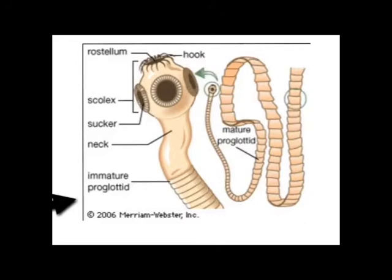A rudimentary nervous system and excretory system run the length of the worm through the proglotids. However, there is no digestive tract. The worm absorbs the host's digested food through its cuticle or outer covering.